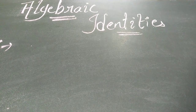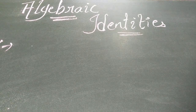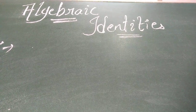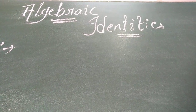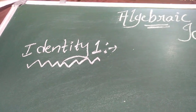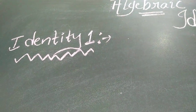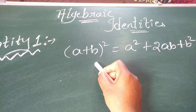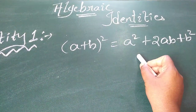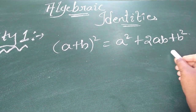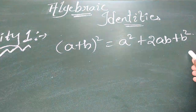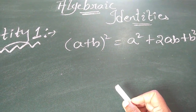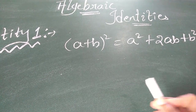Hello children, connecting to my previous video, today we are going to study algebraic identities and the examples based on them. My first identity is a plus b whole square, which is equal to a square plus 2ab plus b square. In my previous video, I have explained how we are getting this expansion.